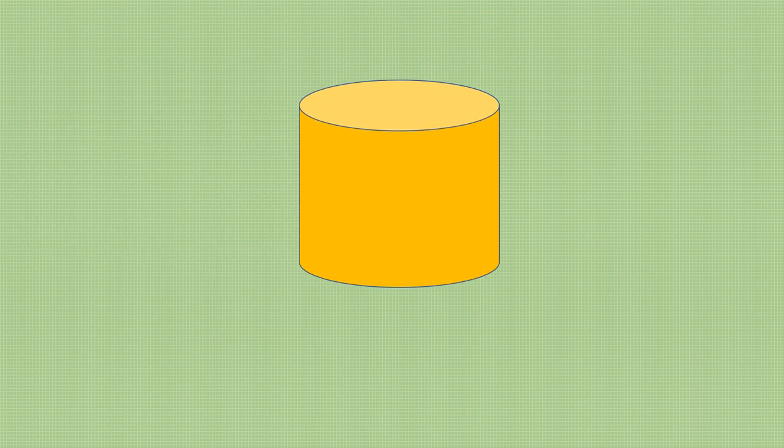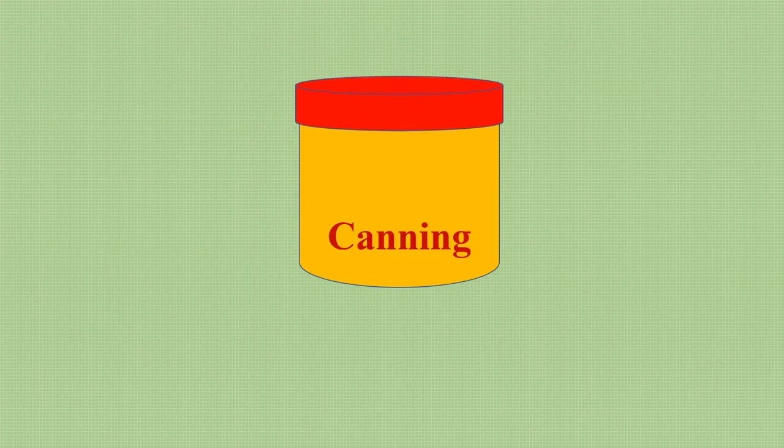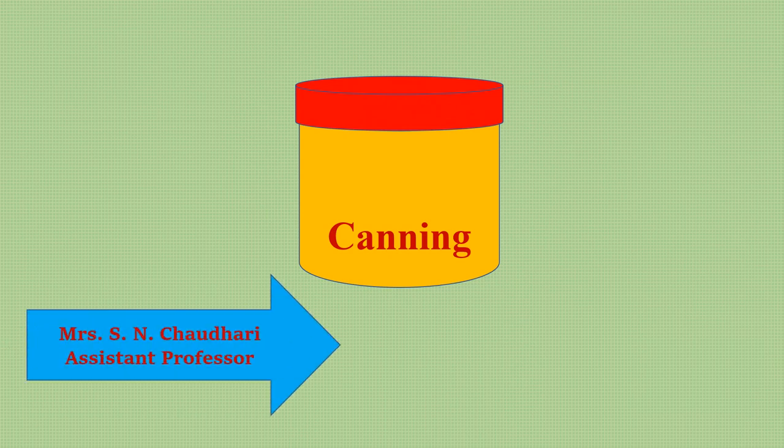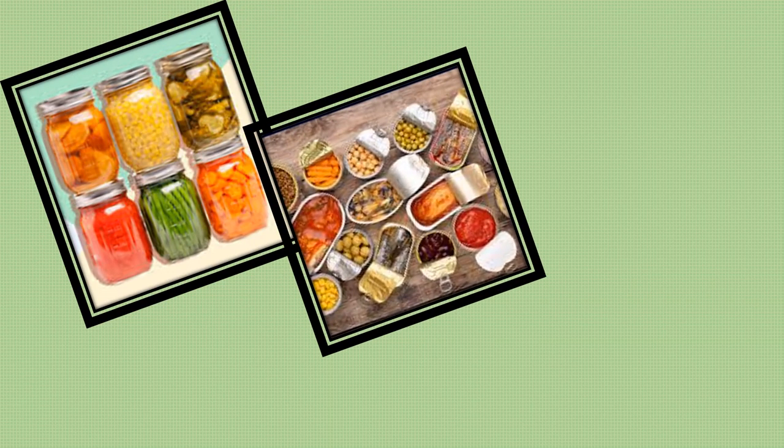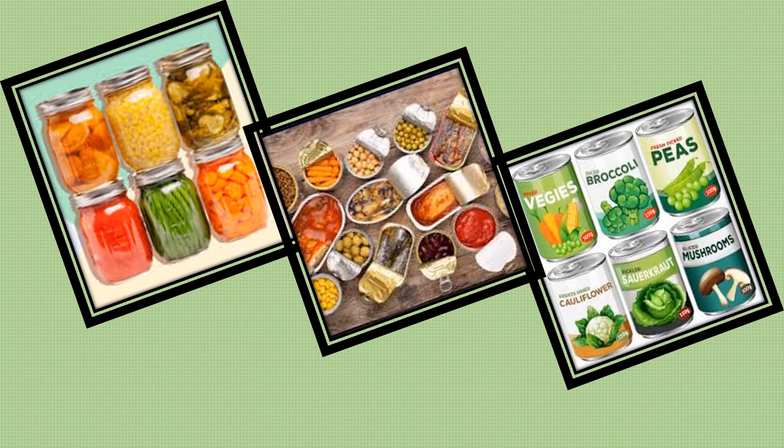Hello and welcome. Let us understand the process of canning. Many times we have seen that many food products are packed in glass containers, as well as many processed and ready-to-eat food products, and fruits and vegetables are packed in metal containers having a longer shelf life. This is possible because of the process of canning.